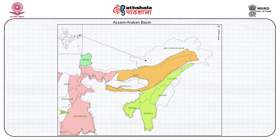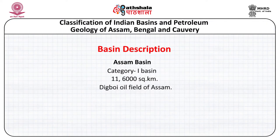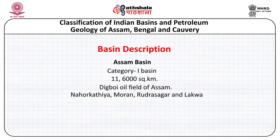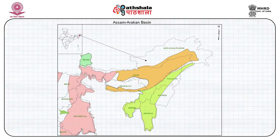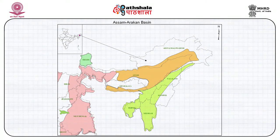Oil exploration in this basin started with the discovery of the Digboi oil field, followed by discoveries at Naharkatia, Moran, Rudrasagar, and Lakwa. The basin covers the states of Meghalaya and Assam, with the upper Assam basin consisting of the northern Himalayan foreland basin and the southeastern Assam-Arakan foreland basin.